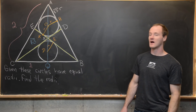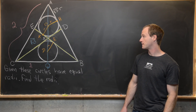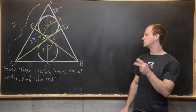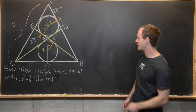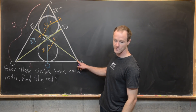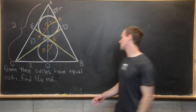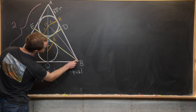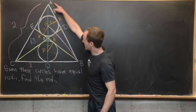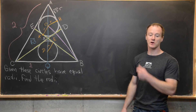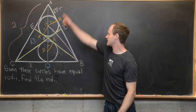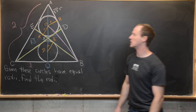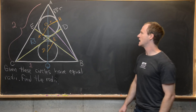Next we're going to introduce one more line segment into this picture, and then we're going to calculate the area of the right-hand half of this equilateral triangle two different ways. The line segment we will introduce goes from B to O. Now we're ready to calculate the area of triangle AQB, and we're going to do that two different ways: one just by taking the area of the whole triangle, and then by adding up the areas of a bunch of the component triangles.